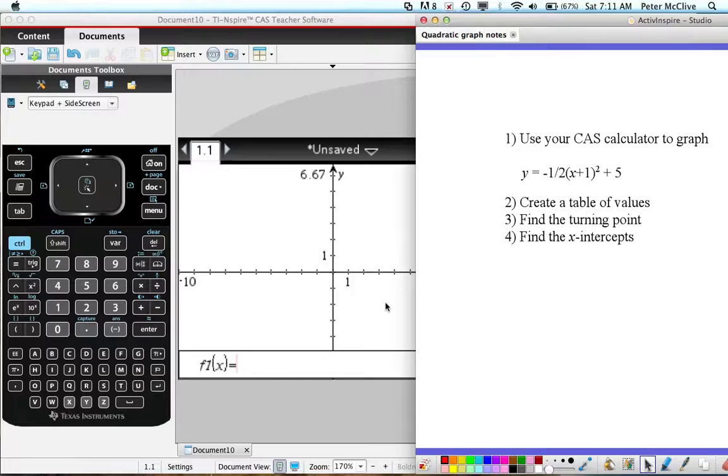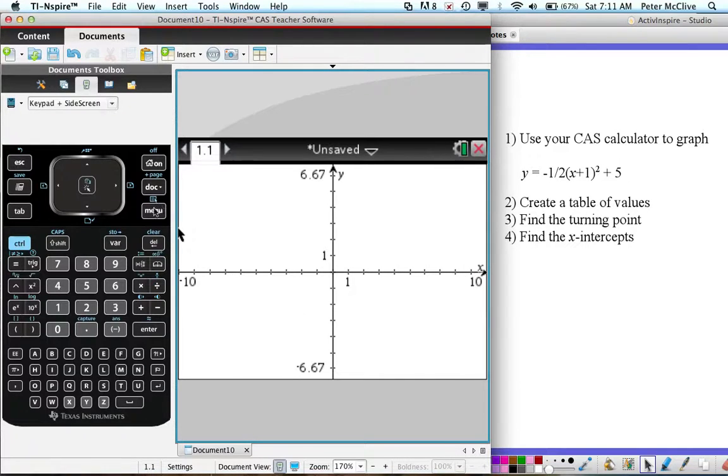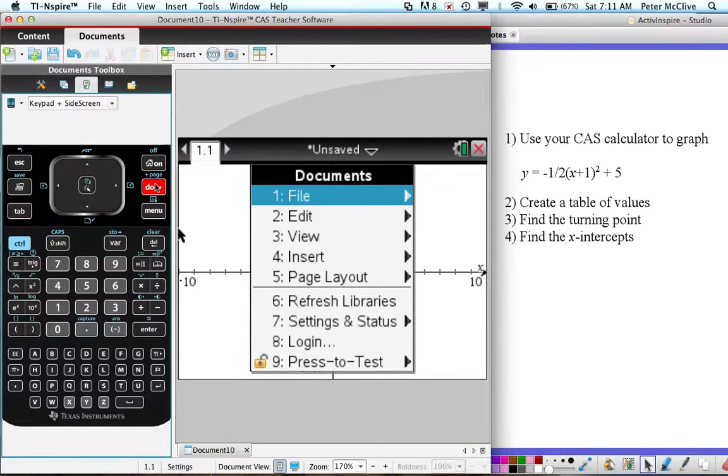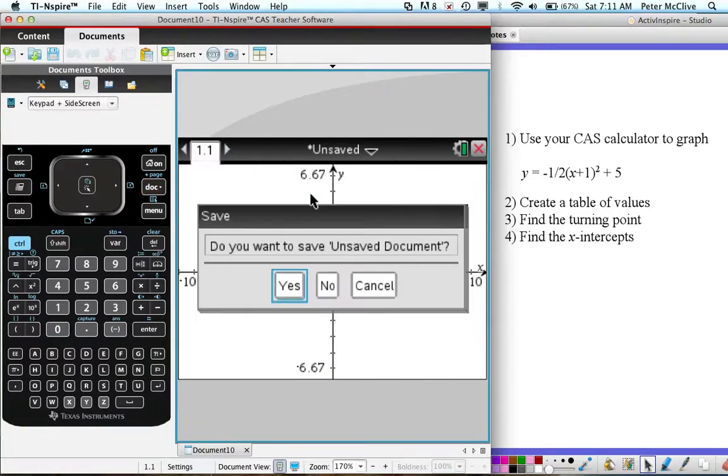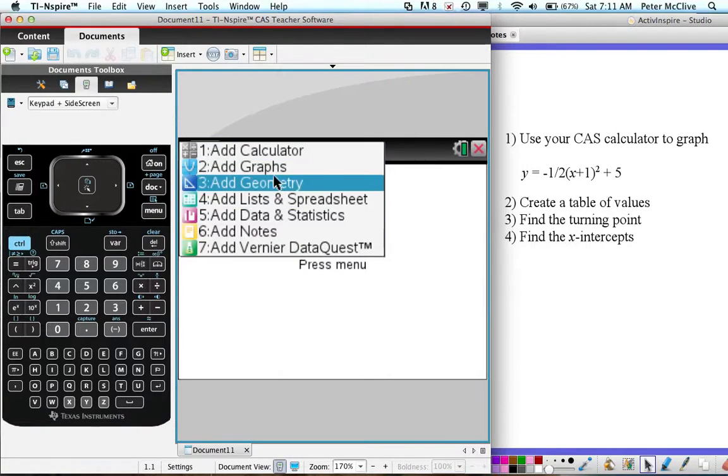So what we're going to do is just go to the calculator, open a new document. Go to document, then to file, new document, get rid of the old one, and then we're going to do graphing first. Add the function for graph, so pick number 2 graphs.